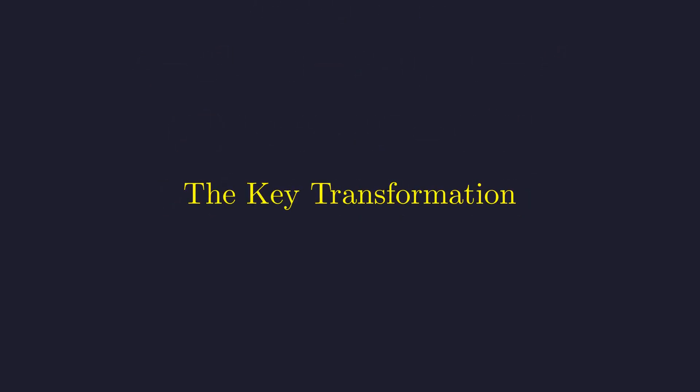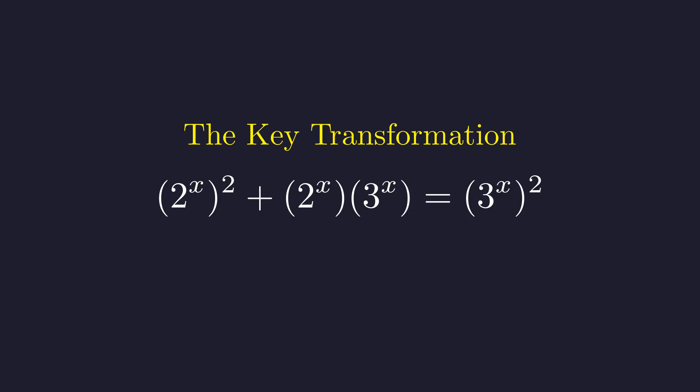Now comes a critical insight. To make progress with this equation, we need a clever algebraic move that will reveal its quadratic nature. Let's see if you can spot what I'm about to do. Here's our equation after applying the exponent rules. What do you notice about the right side? It provides a perfect opportunity for division. The key insight is dividing all terms by 3 raised to the x squared, a valid step since this expression is always positive for real x.